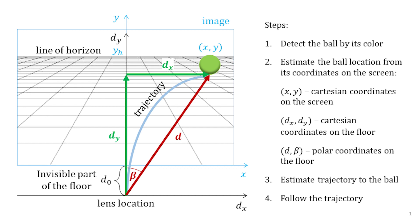I have three coordinate systems in this problem: the Cartesian coordinates of the ball in the camera image, the Cartesian coordinates of the ball on the floor, and the polar coordinates of the ball on the floor. After detecting the ball in the image, I need to find the ball coordinates in the image and then convert them to the ball coordinates on the floor.